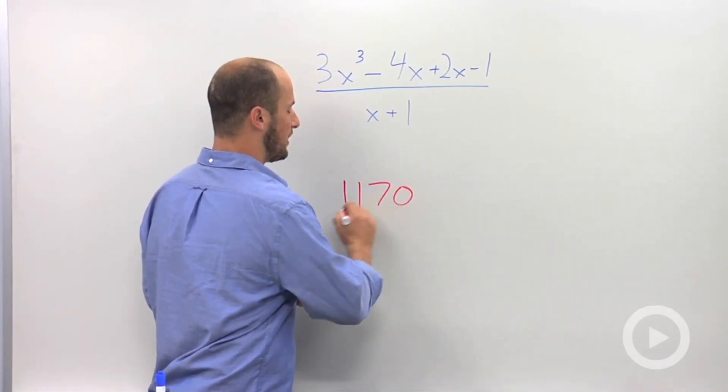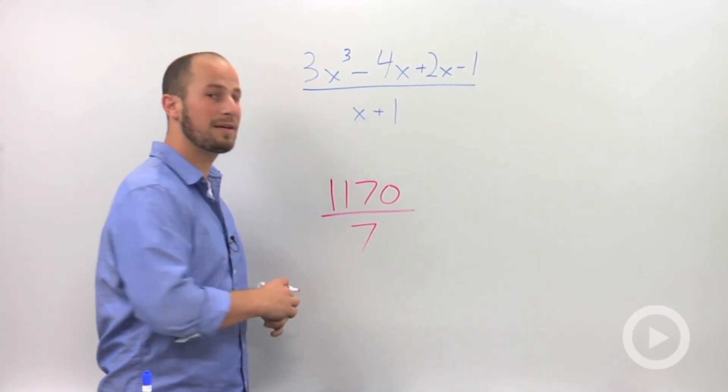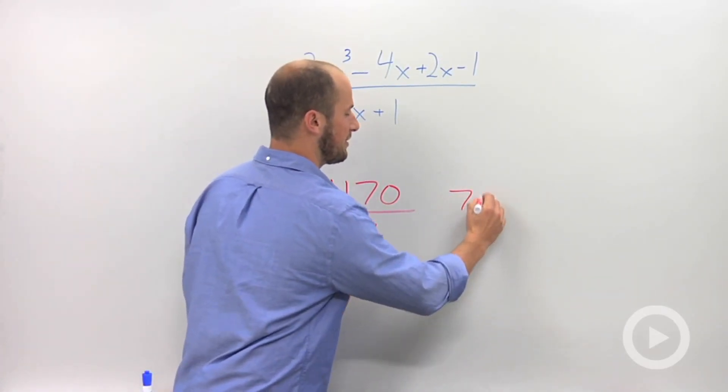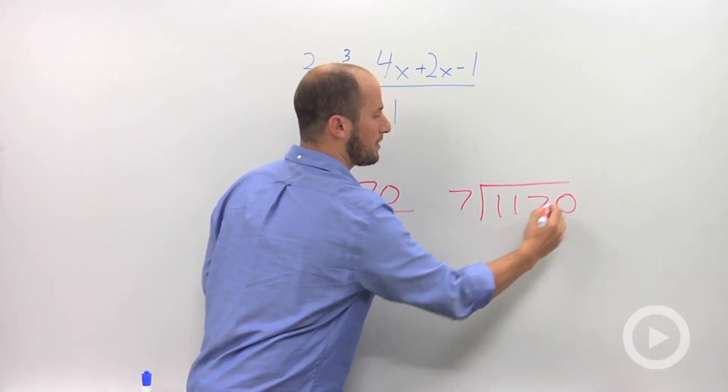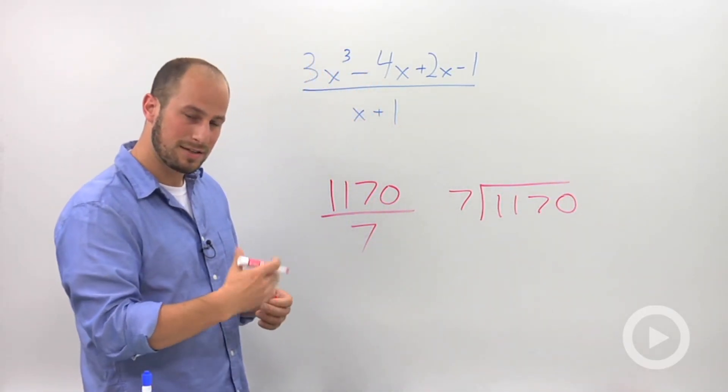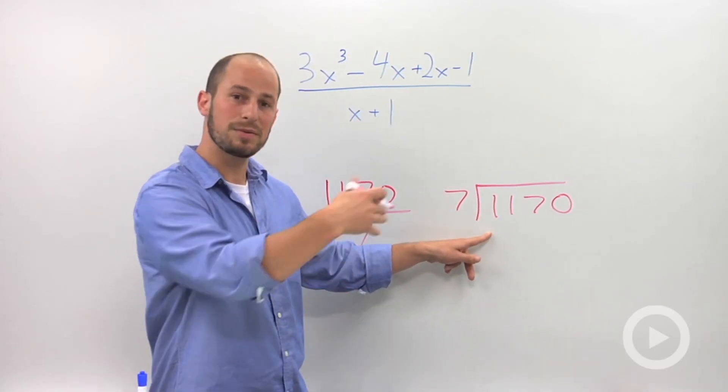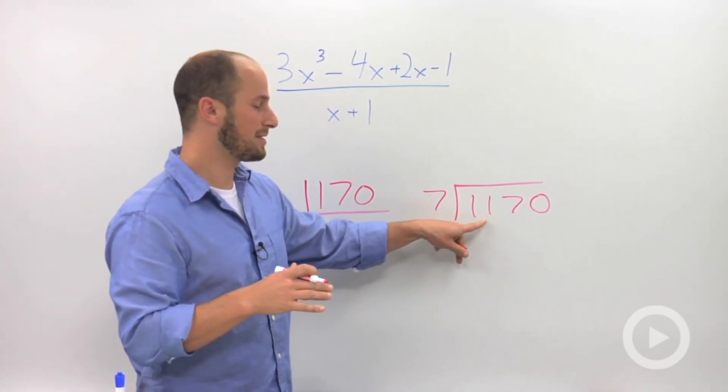I just want to preface it by drawing a parallel to something we already know how to do. So say we're asked to divide 1,170 by 70. What we end up doing is we draw our 7 in a little bracket with a number on the inside. We then start and say, okay, how many times does 7 go into 1? It doesn't, so we go to the next spot. How many times does 7 go into 11?